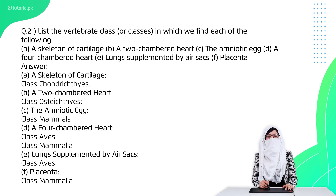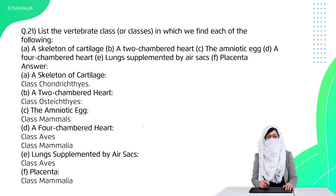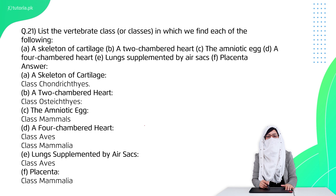Question 21 is: list the vertebrate class for each feature. Skeleton of cartilage is in Chondrichthyes. Two-chamber heart is in the class Osteichthyes (fishes). Amniotic eggs are in reptilians. Four-chamber heart is in birds and mammals. Lungs supplemented by air sacs are a character of birds. Placenta is in the class Mammalia.